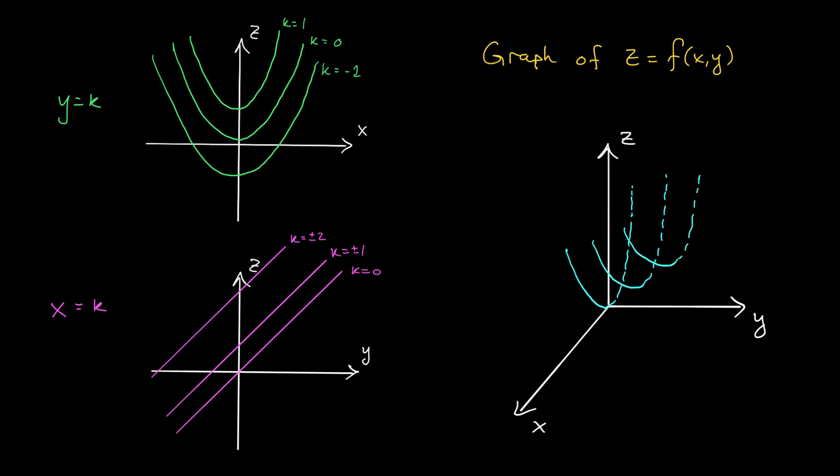When I move in the direction of the negative y-axis, my parabolas are going to shift down. These are my negative k values. So I'm going to get a parabola here. I'm going to get a parabola here. And you can fill in more if you need to, but I think I can start to see the graph of my function.